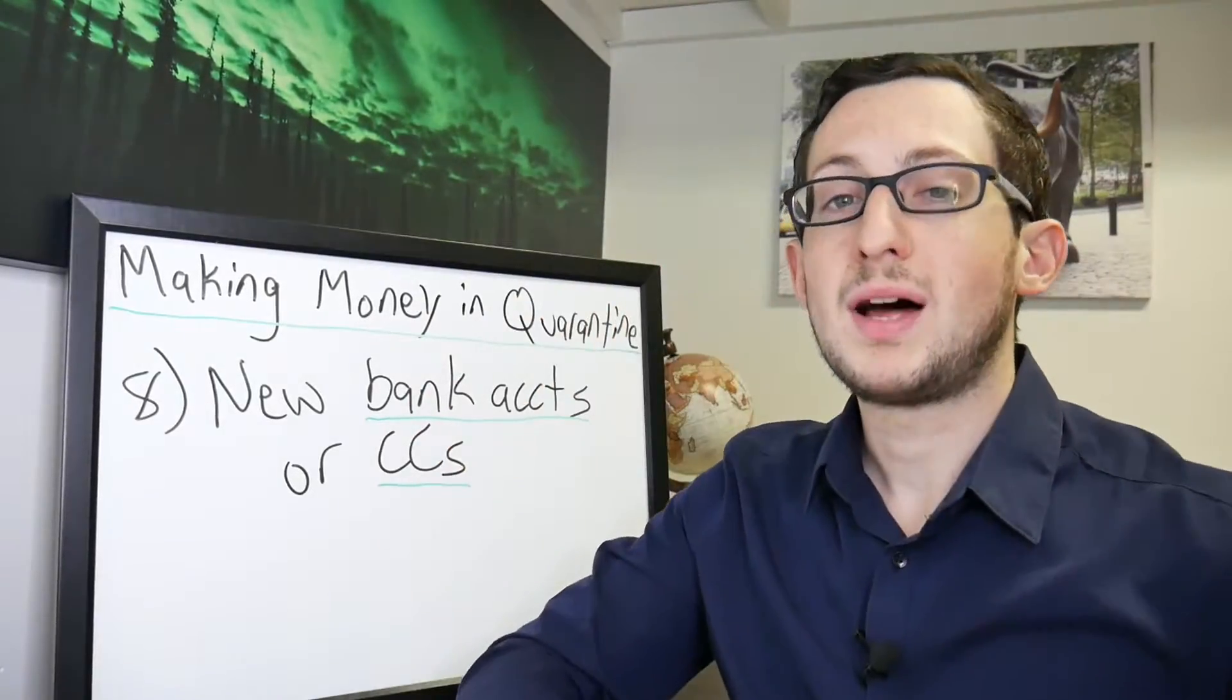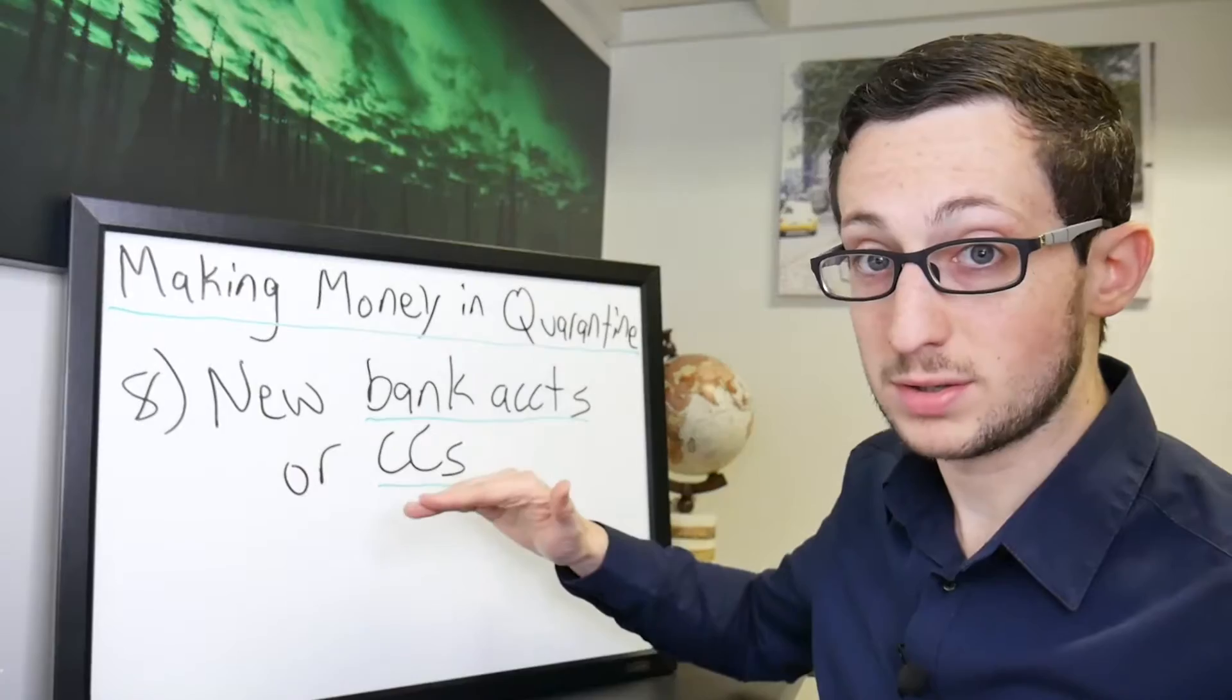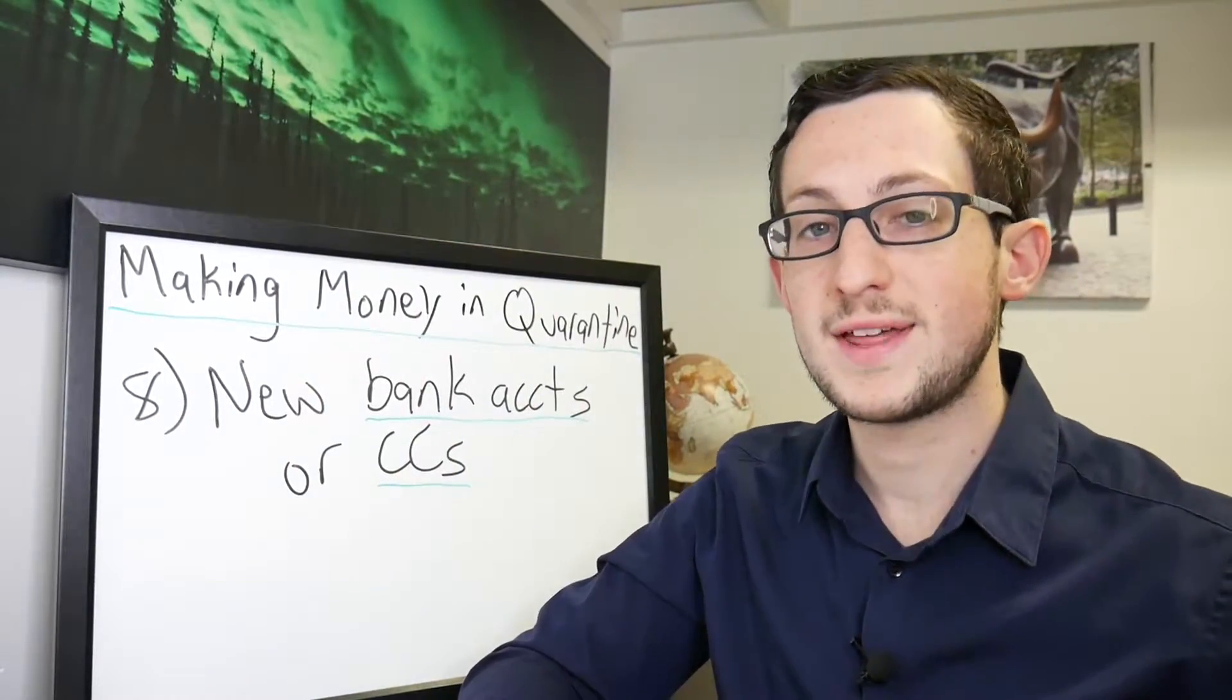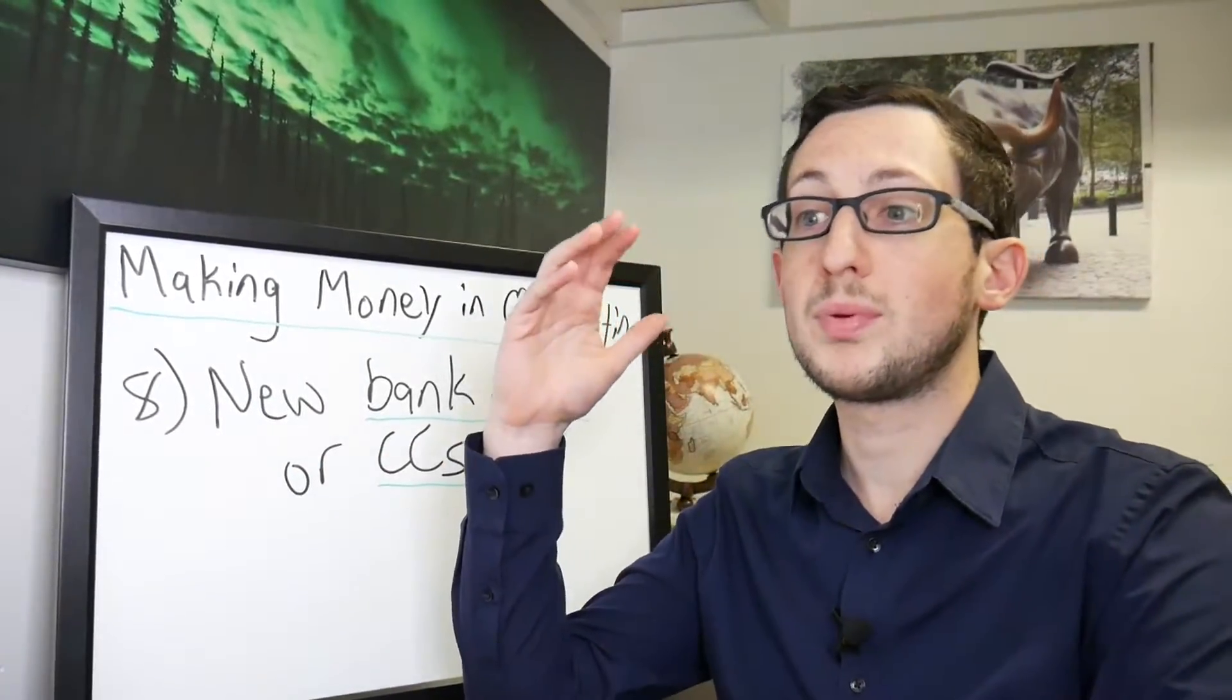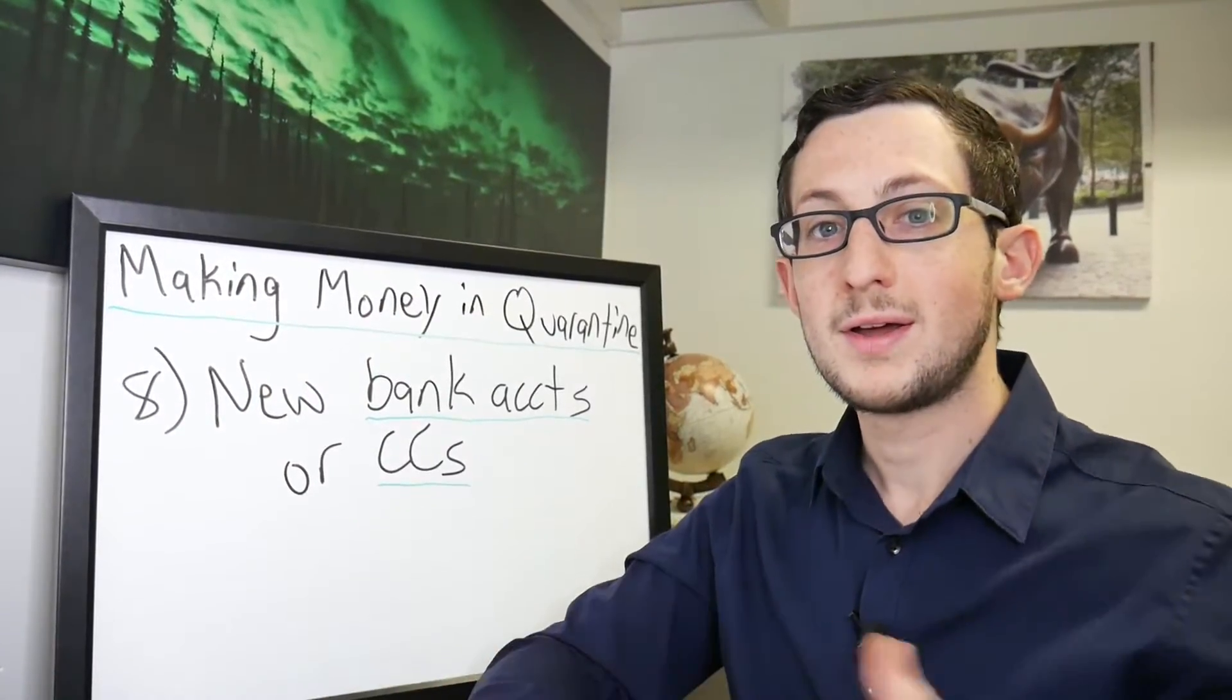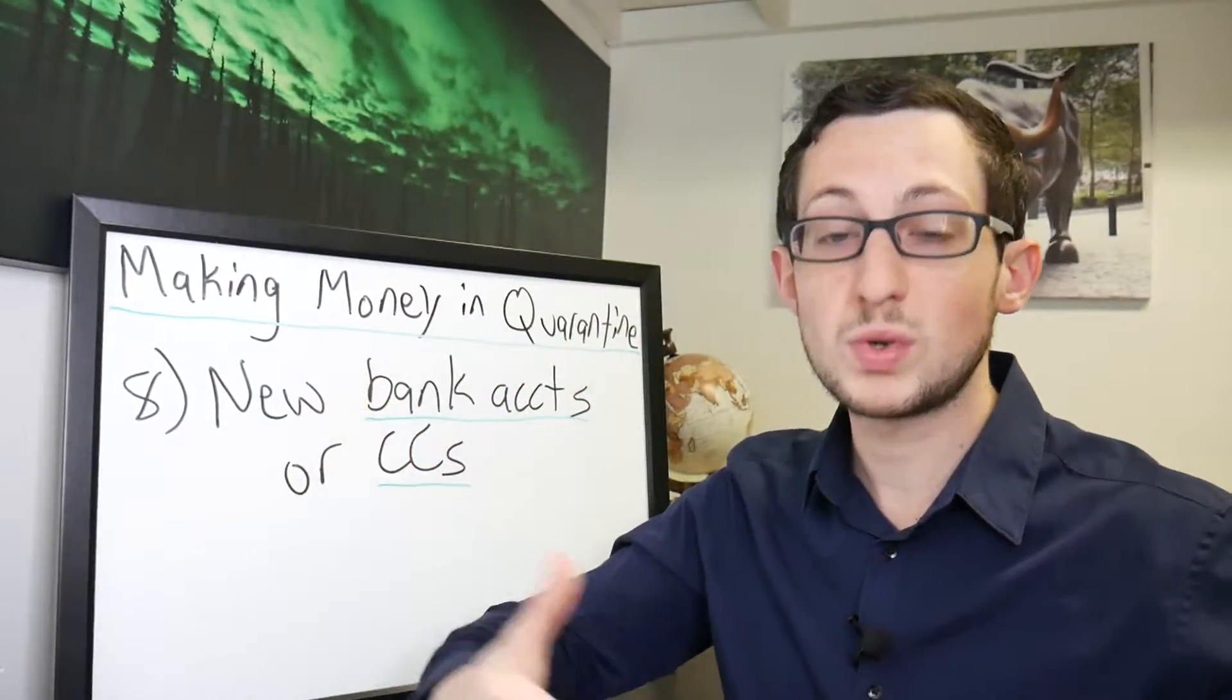Number eight could slip a lot of people's minds especially right now, but you could open up new bank accounts or credit cards. Of course do this wisely. However we could understand there are a lot of cash bonuses for these different things. I know a couple months ago I opened up a Discover Savings account. You deposit a certain amount and you're able to get a couple hundred bucks. That's a lot better than nothing.